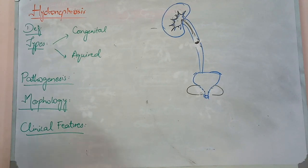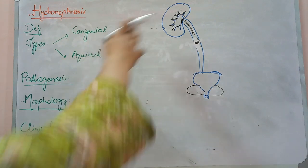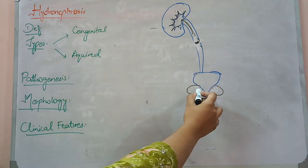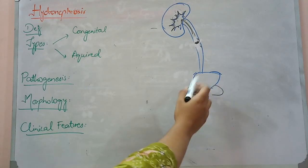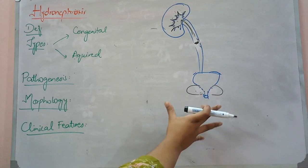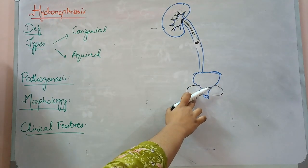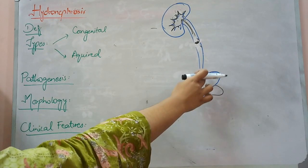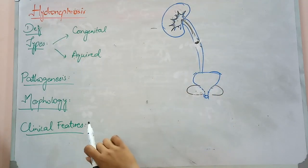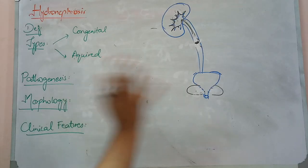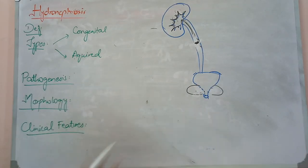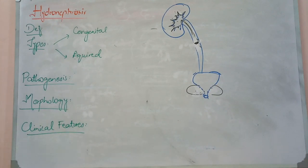The most common proliferative lesion cause is BPH. After that, any cancer in this area — carcinoma of the prostate will always become an outgrowth and compress the urethra. Similarly, bladder carcinoma can compress. If the patient is female, uterine carcinoma can also be a compressing factor.